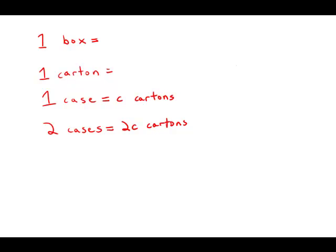Then we're told that each carton contains B boxes. So if we have one case, we have C cartons, each with B boxes in them. We multiply and get B times C boxes. Similarly, in two cases, we'd have two BC boxes.